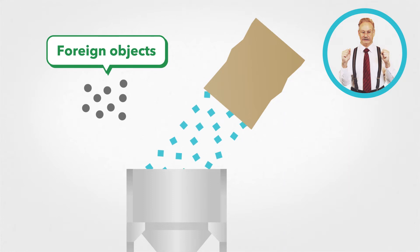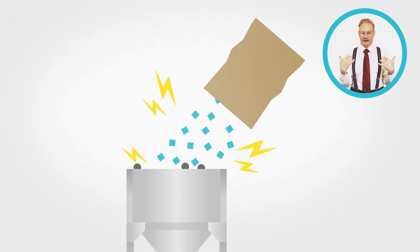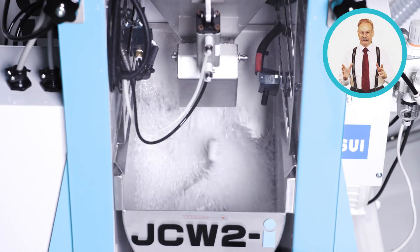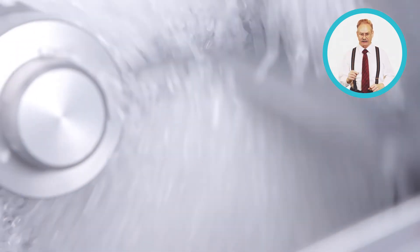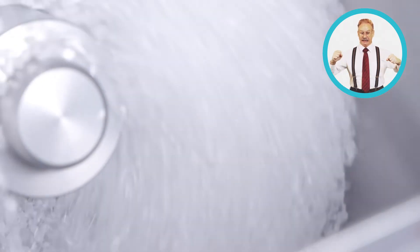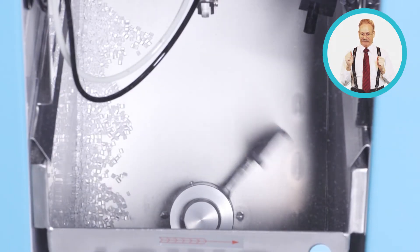Material contact, impact, and friction cause static electricity, which attracts foreign objects, such as dust floating in the air. When blending materials and master batches, static electricity caused by contact, impact, and friction can make it difficult to properly feed materials.